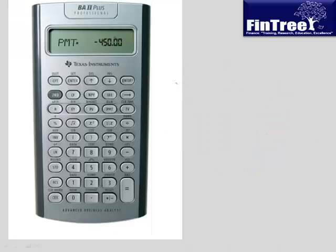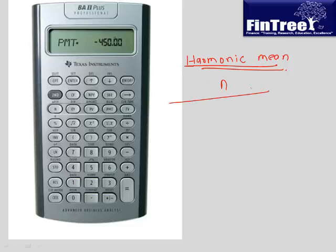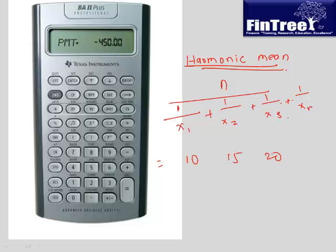The last type of mean is harmonic mean. The formula is: n divided by (1/x1 + 1/x2 + ... + 1/xn). For example, to calculate the harmonic mean of 10, 15, and 20: there are 3 values, so it's 3 divided by (1/10 + 1/15 + 1/20).